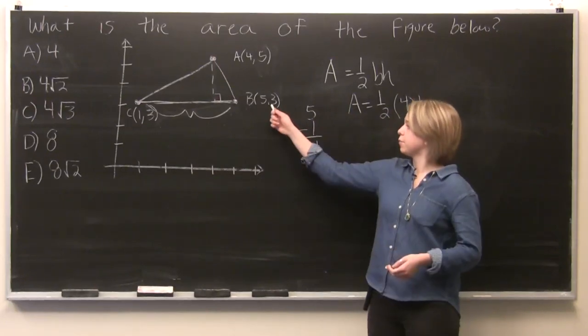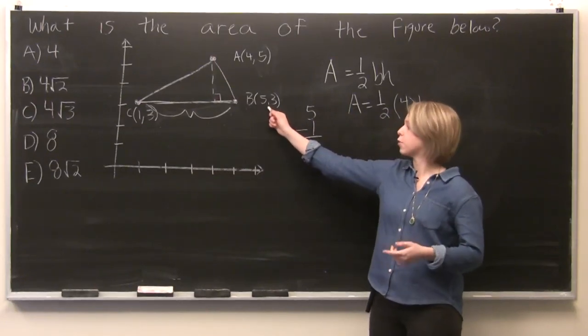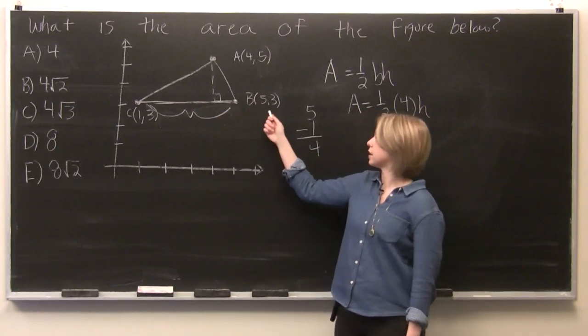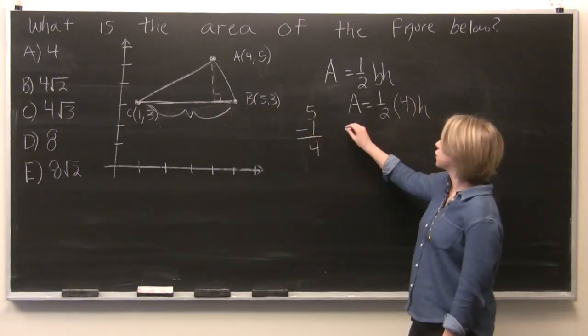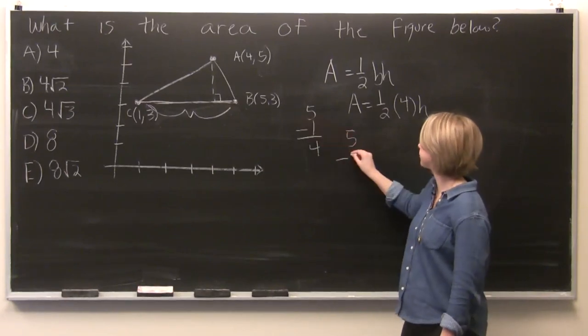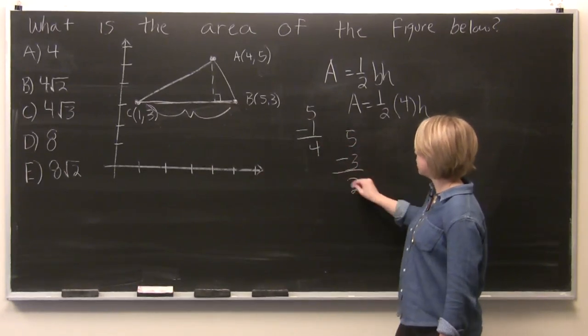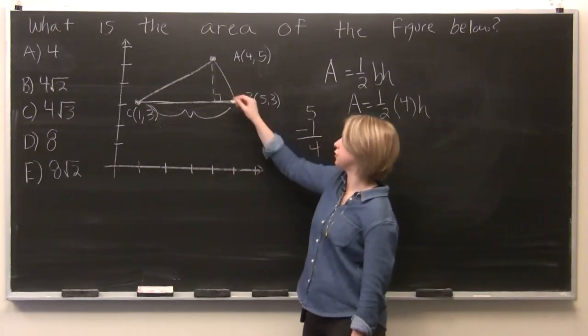And subtracting the y coordinate of either b or c, it doesn't matter because they're the same, from the y coordinate of a. So we've got 5, again, minus 3. And we know that our height is 2 units.